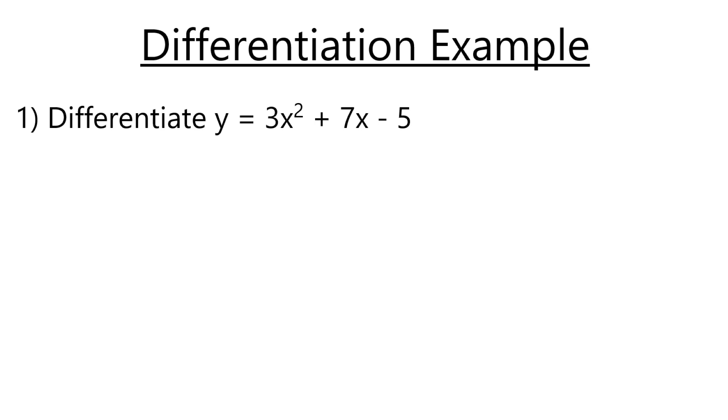When we do this, we want to take the power of the x - in this case, that's the 2 there - and multiply that with the front number. Then we want to remove a power from the x. Same thing with 7x and the same thing with -5.